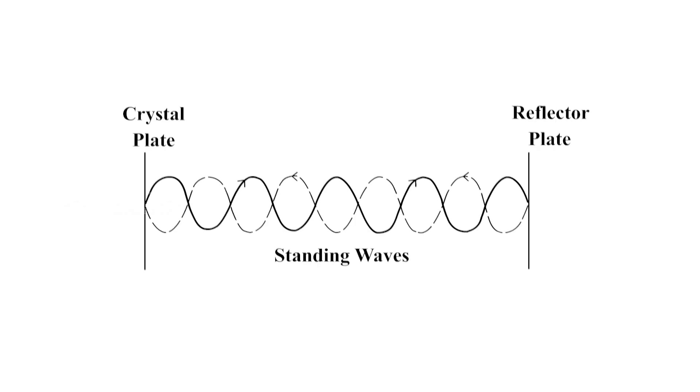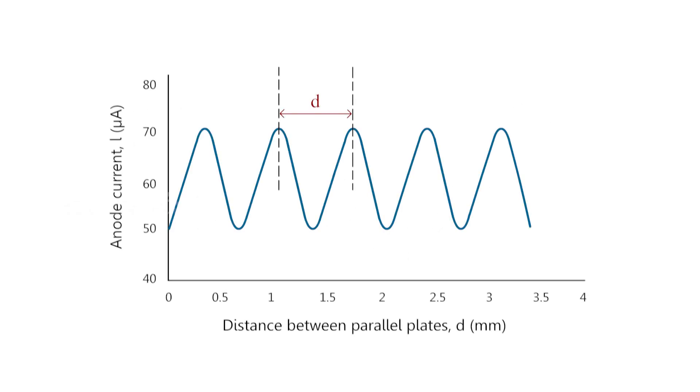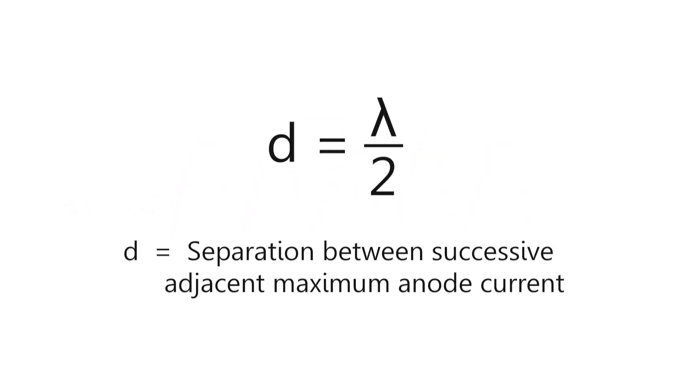At this point, acoustic resonance occurs and this gives rise to an electrical reaction on the generator driving the quartz plate. Now the anode current of the generator becomes maxima. If we increase or decrease the distance and the variation is exactly one half of the wavelength, that is lambda by 2 or its multiple, the anode current again becomes maxima.